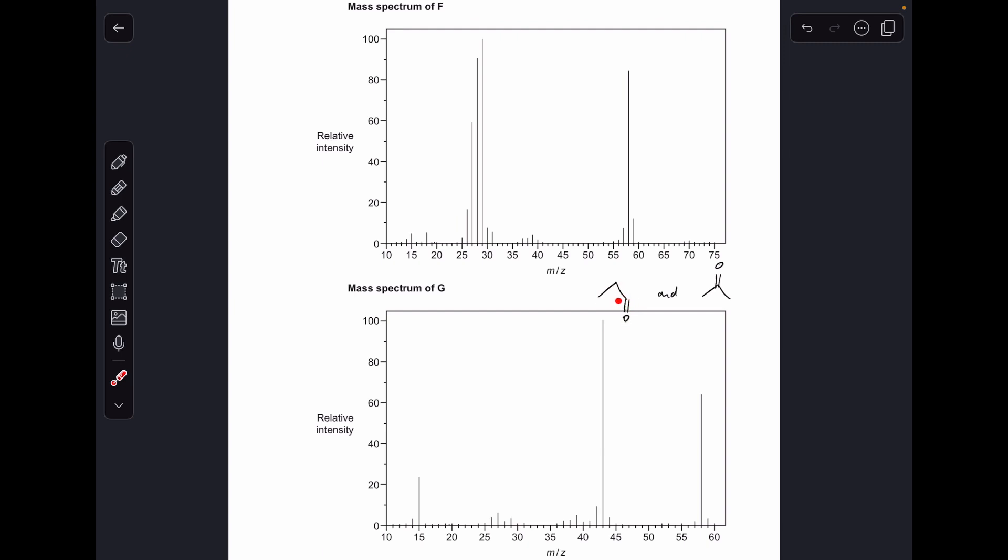So this molecule here, propanal, is F and this one here, propanone, must be G.